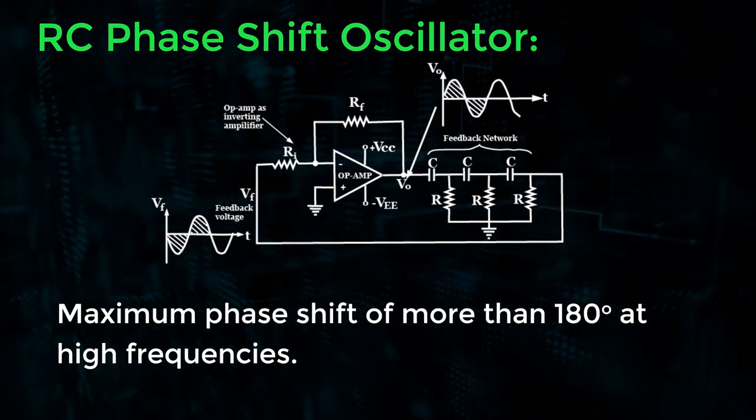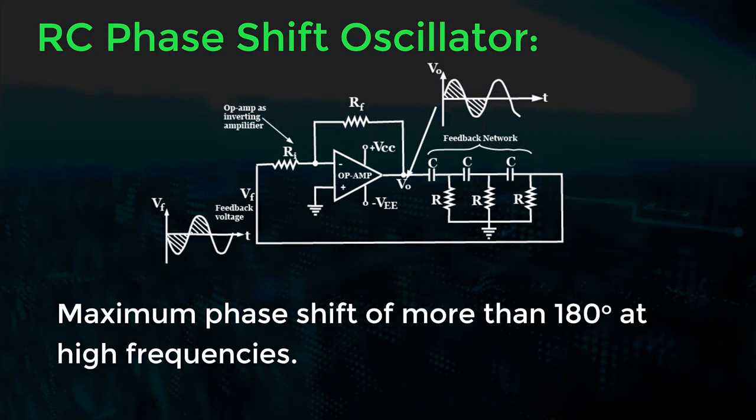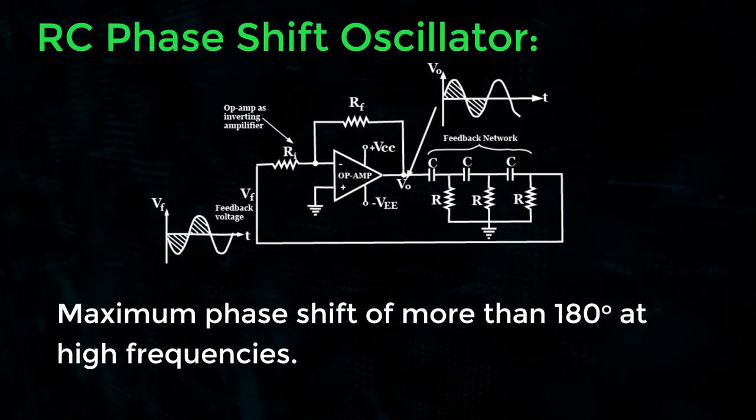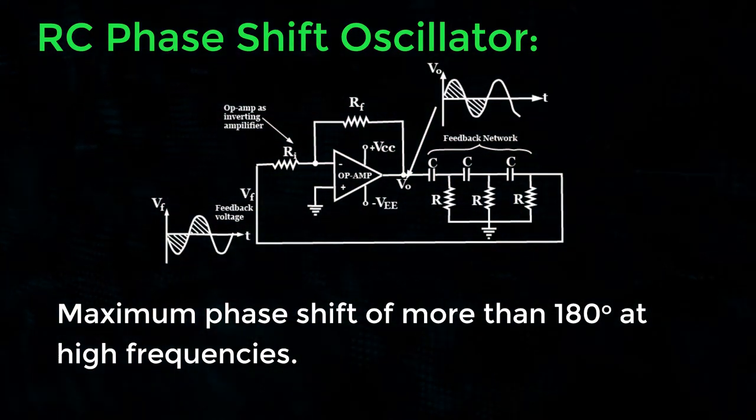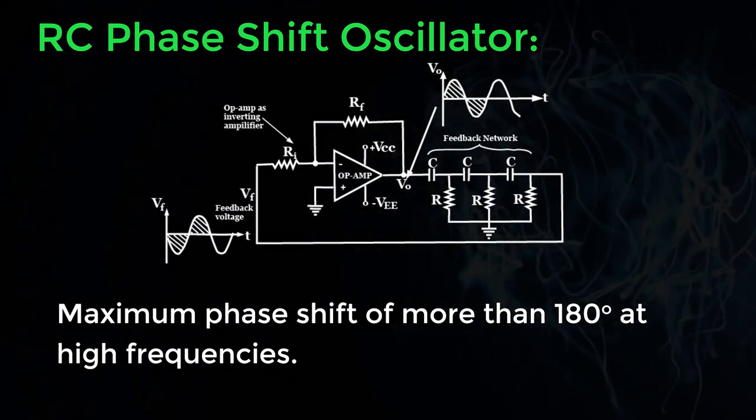It must have a maximum phase shift of more than 180 degrees at high frequencies so that the phase shift at the desired oscillation frequency can be 180 degrees.